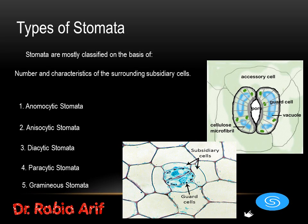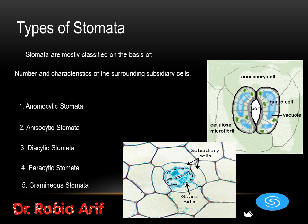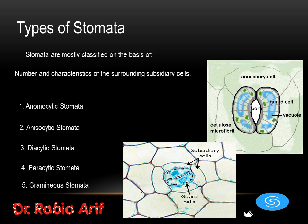Stomata are mostly classified on the basis of the number and characteristics of the surrounding subsidiary cells. This means that the stomata are classified on the basis of the subsidiary cells. So the subsidiary cells are the basic unit that play an important role in the classification of stomata.